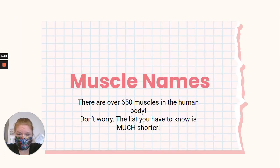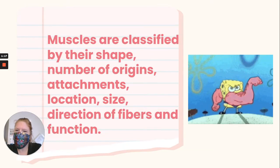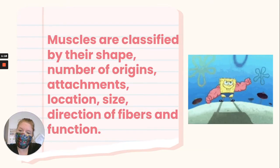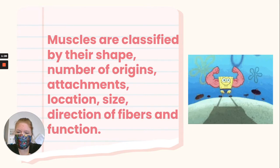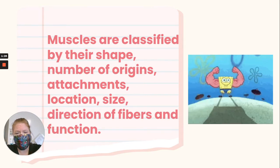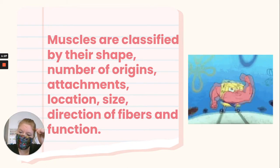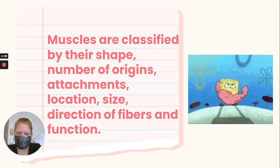So muscle names. There are over 650 muscles in the human body, but don't worry — the list you have to know is much shorter. Muscles are classified by their shape, by the number of origins, by their attachments, by their location, by their size, by the direction of fibers, and by their function. We're going to look at some examples and see exactly what I'm talking about.